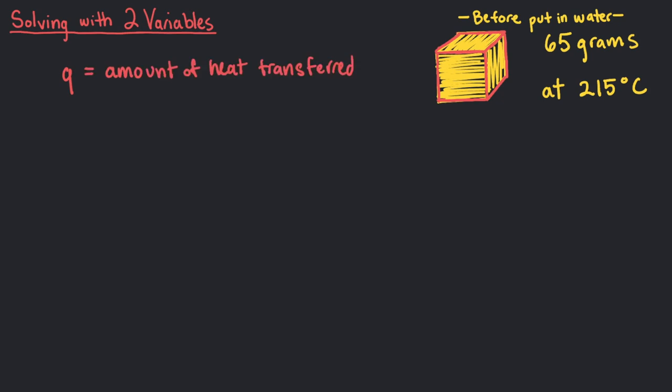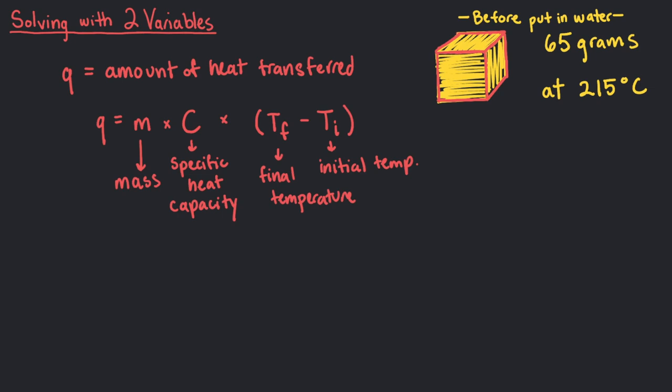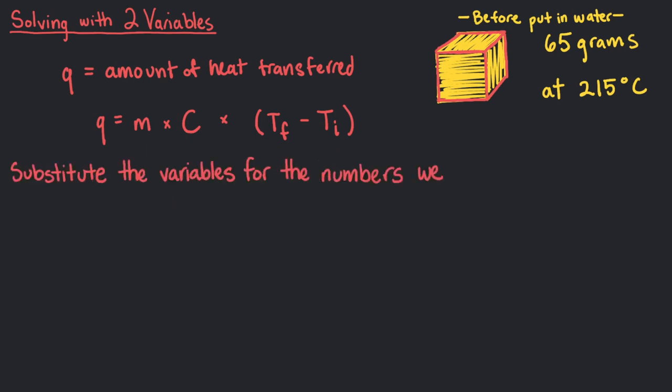Q is the amount of heat transferred. It equals the mass times specific heat capacity times the change in temperature. I won't go into too much of the specifics for thermodynamics, but don't worry about the units for now. Using this formula, substitute the variables for the numbers we know for the loss of heat of the piece of iron. The specific heat capacity is 0.45 joules per gram degrees celsius for iron.